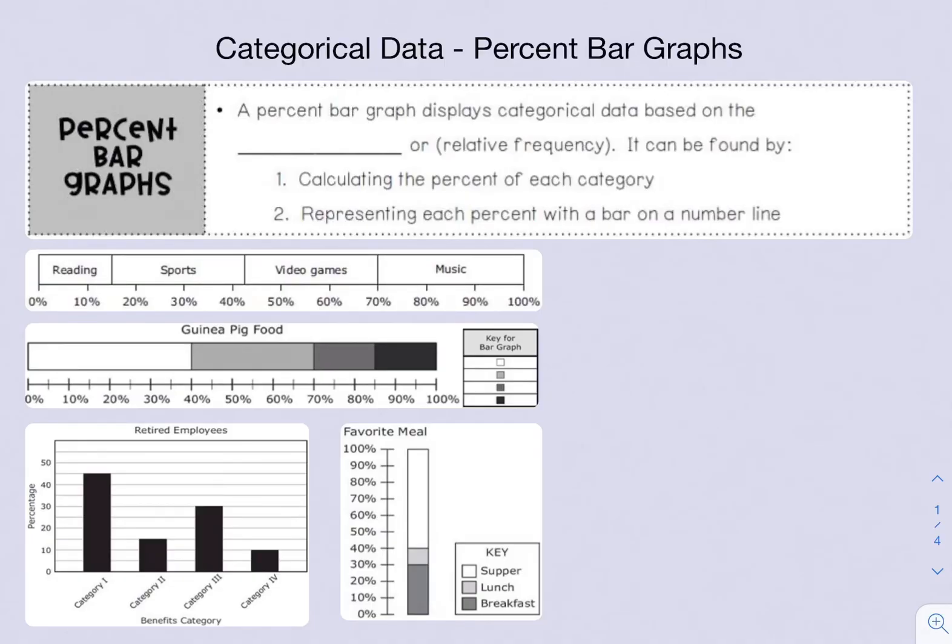A percent bar graph displays categorical data based on the percentage or relative frequency. It can be found by calculating the percent of each category and then representing each percent with a bar on a number line.